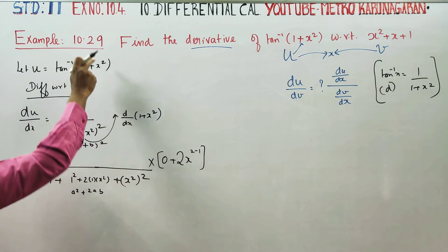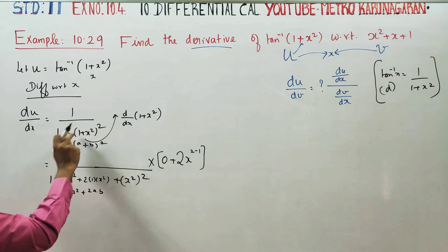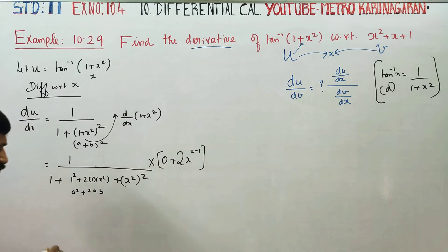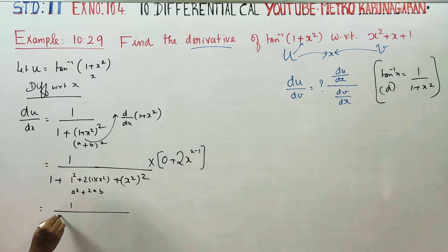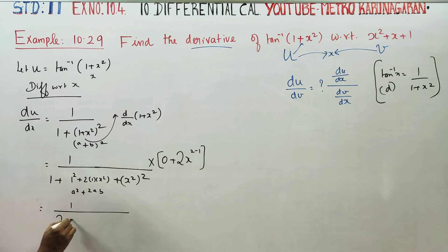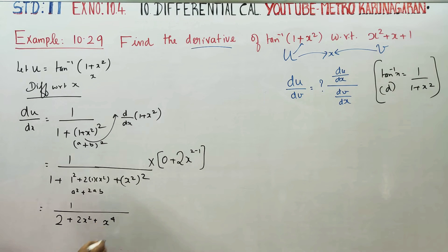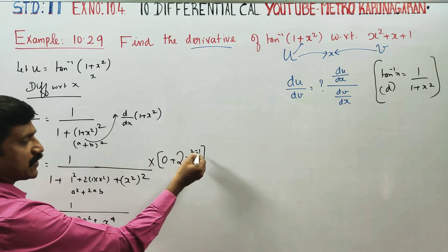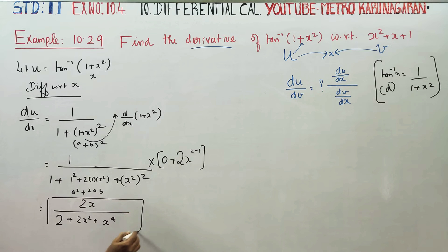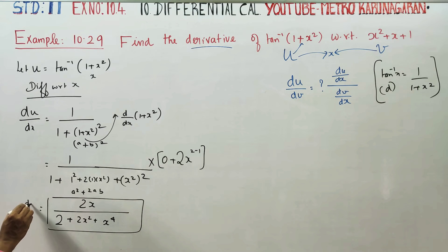For tan inverse of a function of x, the formula gives 1 by 1 plus function of x squared, and then multiply by the derivative of the inner function. The last stage gives 1 by 1 plus 2x square plus x power 4, multiplied by 2x in the numerator. So du by dx equals 2x divided by 2 plus 2x square plus x power 4.